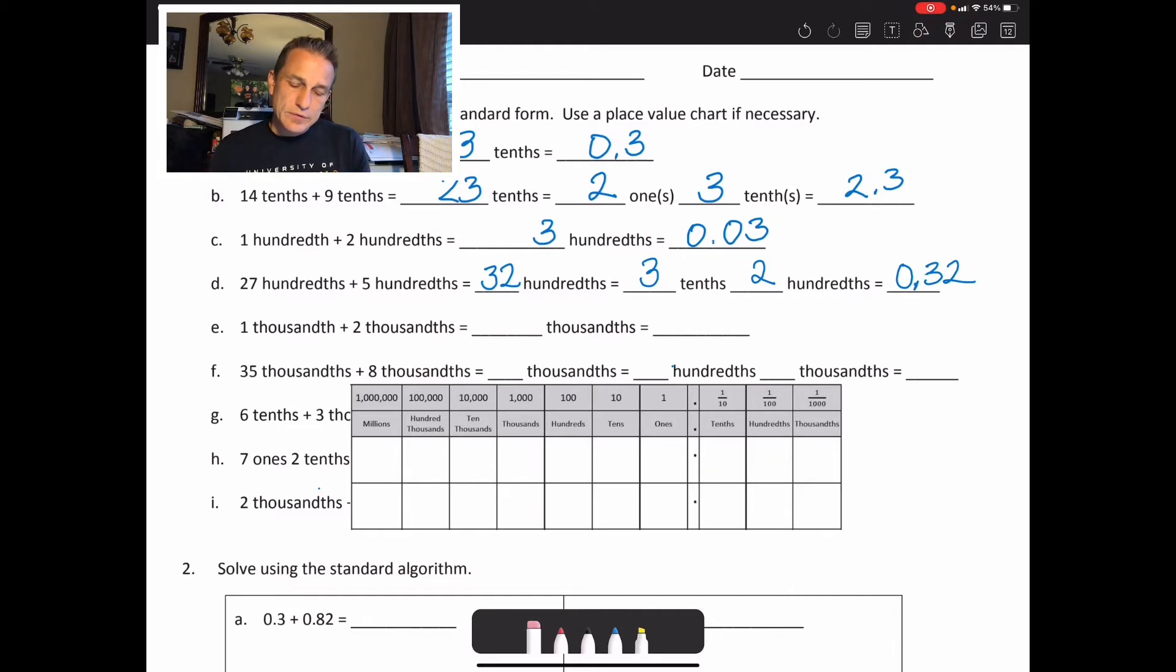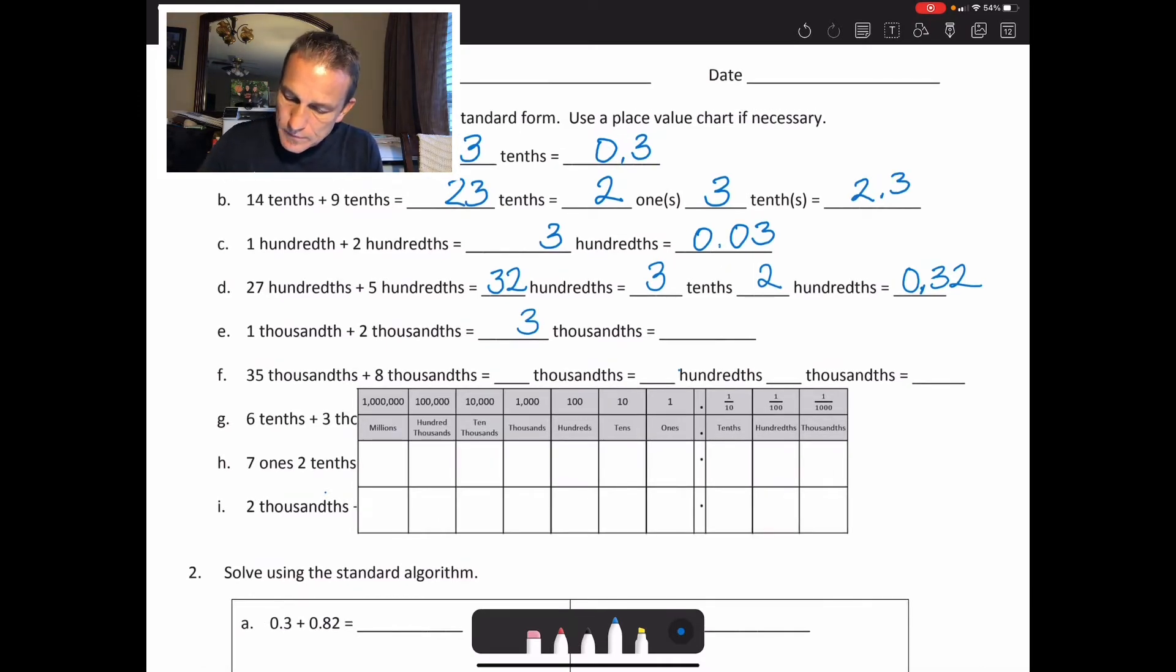All right, next, we're going to do 1 thousandth plus 2 thousandths. And that would equal 3 thousandths. Okay, and then write that in standard form. 0.003. So the 3 is in the thousandths place.